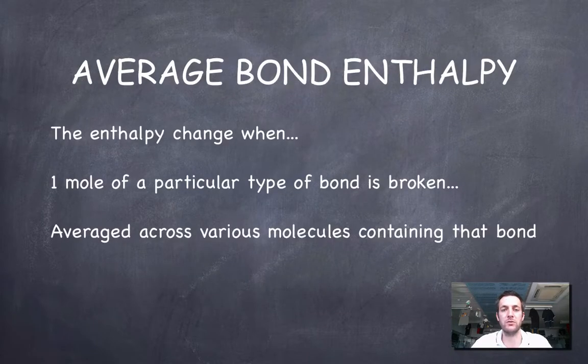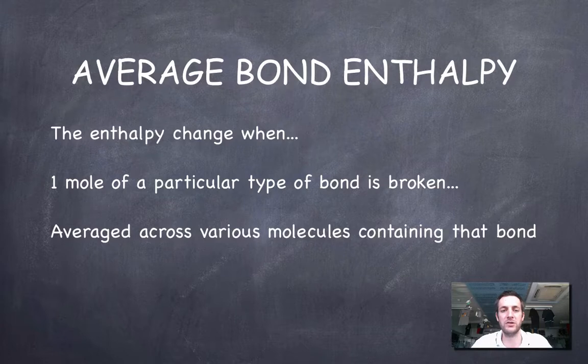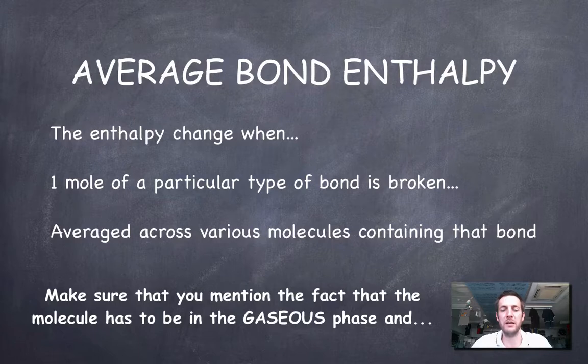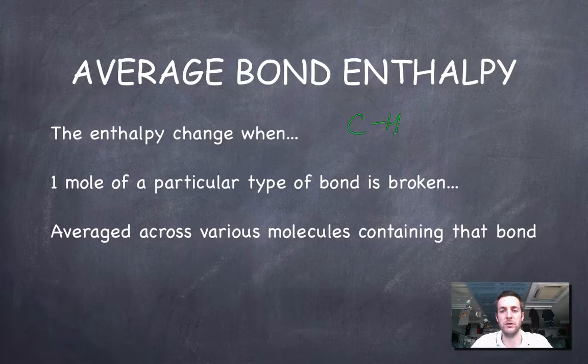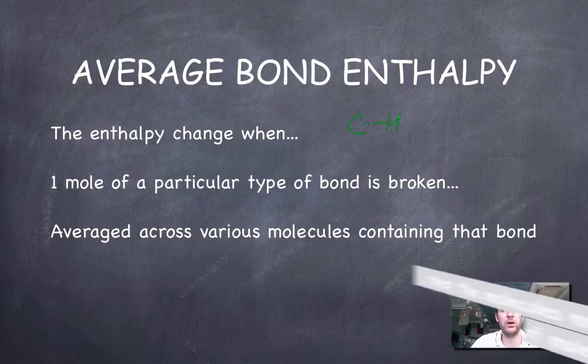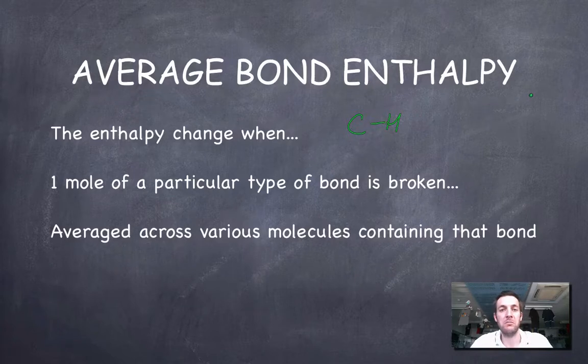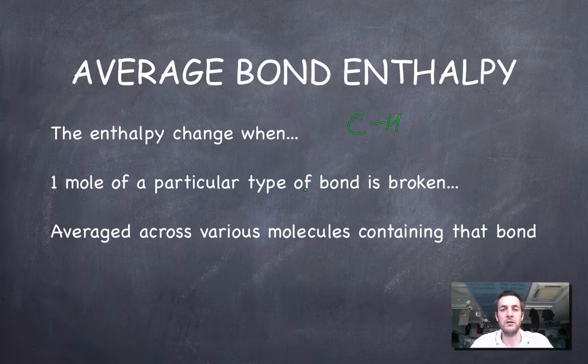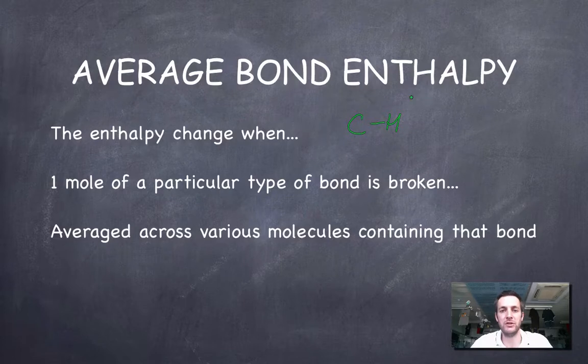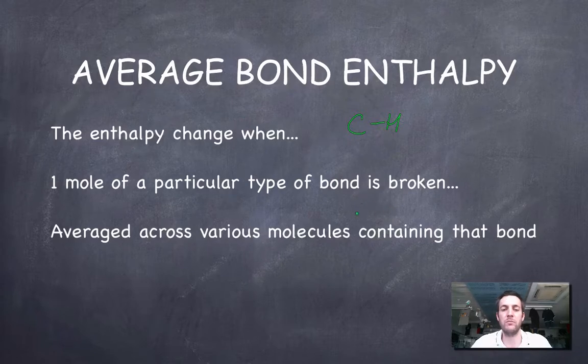When we look these things up, what we're looking up is things called average bond enthalpies. But not only do we have to be able to look them up in an IB exam, we also have to be able to define what they are. So this is a really important definition to learn. The average bond enthalpy is the enthalpy change when one mole of a particular type of bond is broken. For example, I could be talking about a carbon-hydrogen bond. But it's important to realize that the carbon-hydrogen bond can have a different amount of energy or require a different amount of energy to break depending on what kind of context it's in. So, in other words, in one molecule it might require X amount of kilojoules per mole. In another molecule it might require Y kilojoules per mole. So, to take into account this fact, what we've done is we've averaged the amount of energy required to break this kind of bond across a huge number of different molecules that contain that bond. So that forms quite an important part of our definition. The average bond enthalpy is the enthalpy change not only when one mole of a particular type of bond is broken, but this is averaged across various molecules containing that bond.